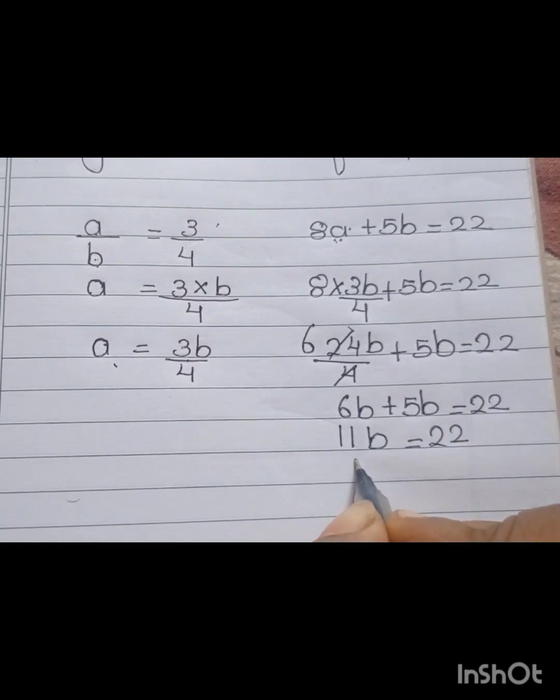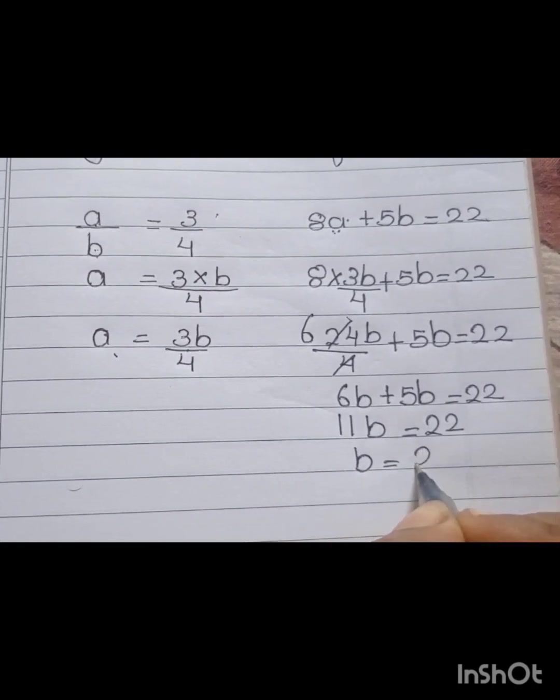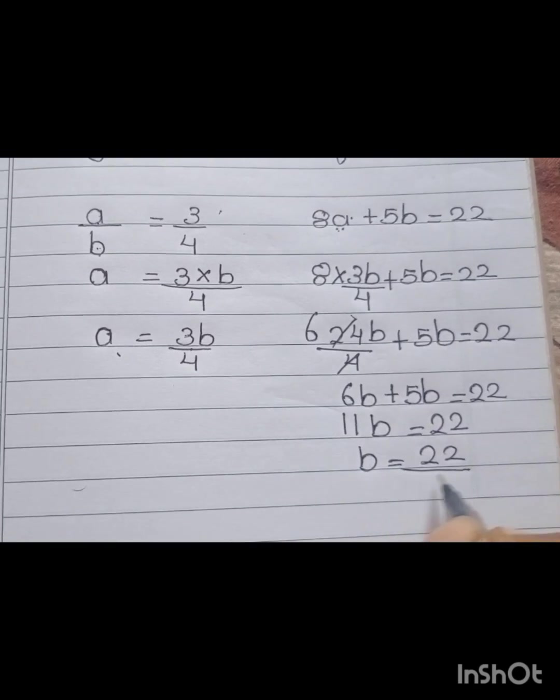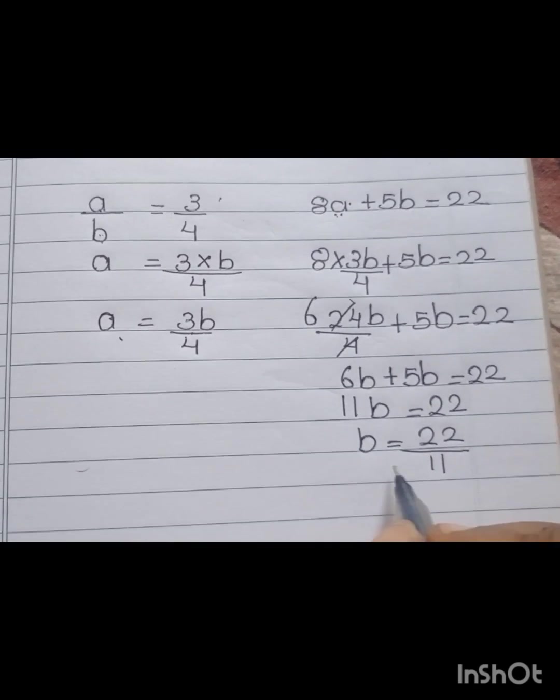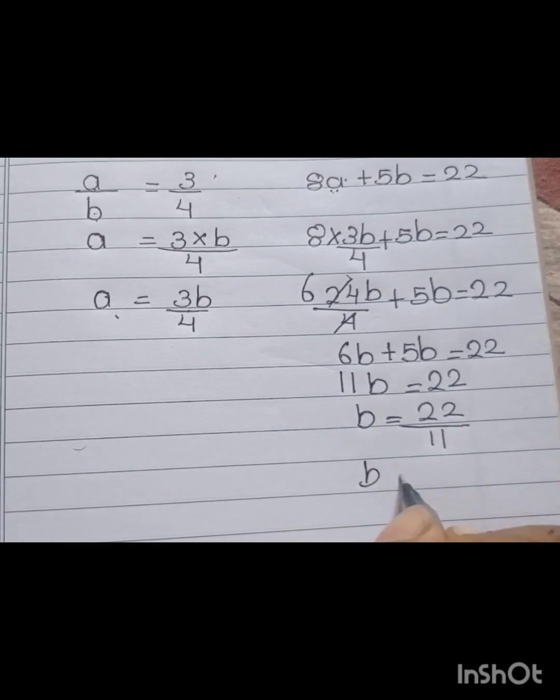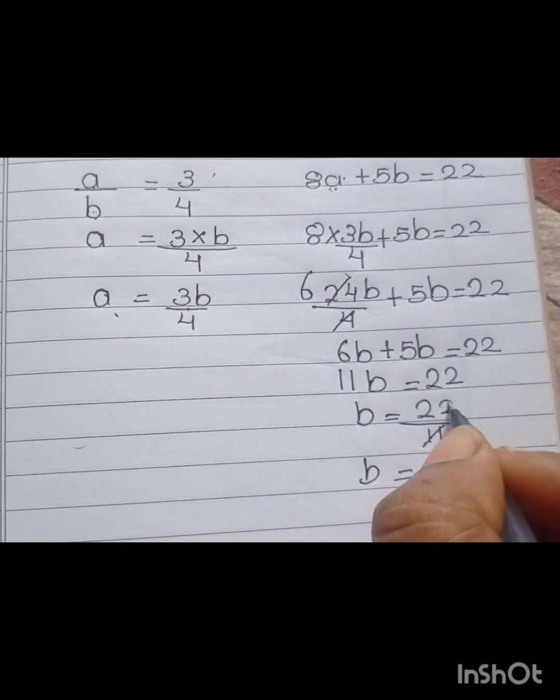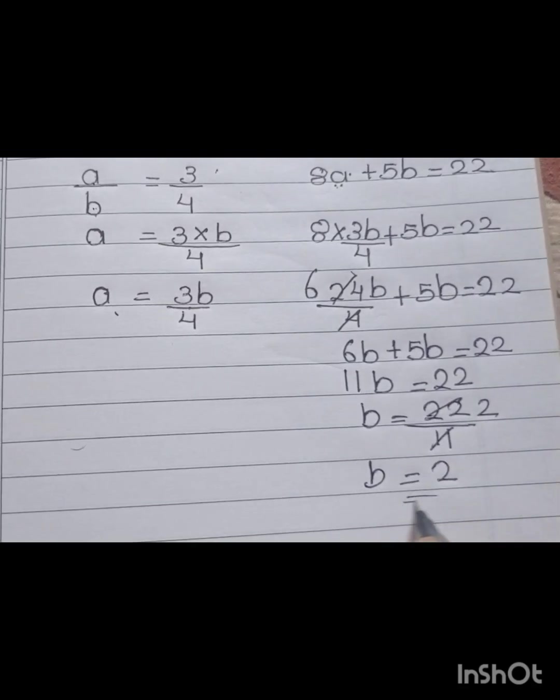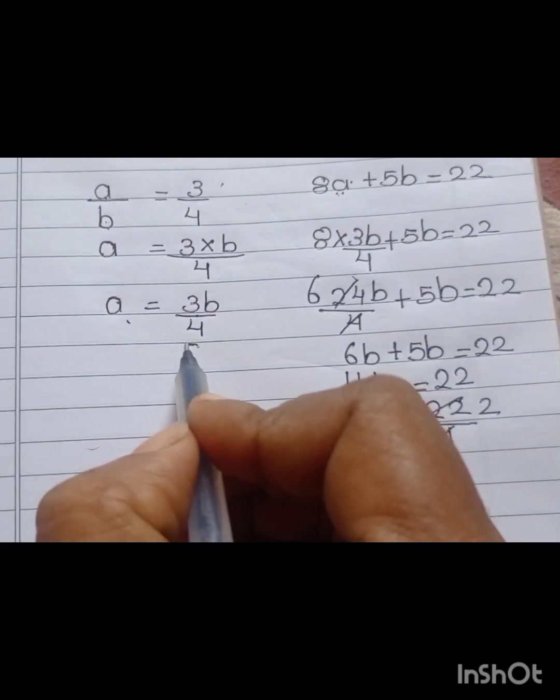Then, B equal to 22 divided by 11. B is equal to 2. We get B equal to 2.